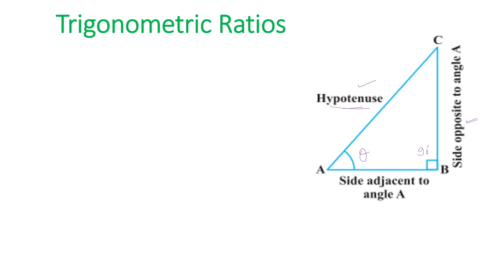If I consider any acute angle A as theta, then this side is known as the side opposite to angle A, and this side is known as the side adjacent to angle A. We have three sides: AB, BC, and AC, and three angles: angle A, angle B, and angle C. The trigonometric ratios are the relations between these sides and angles.